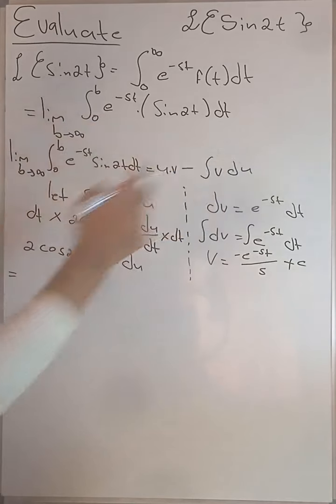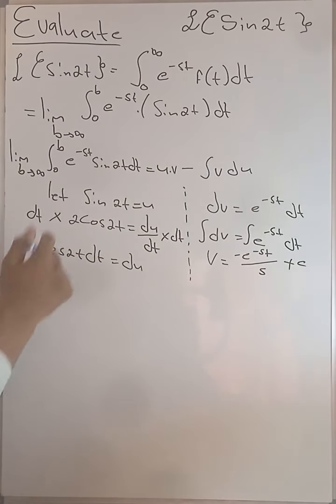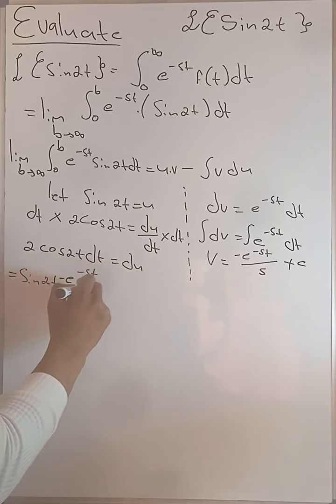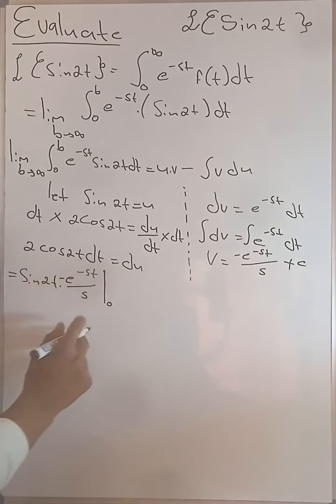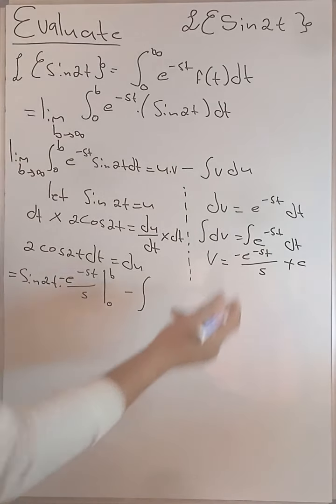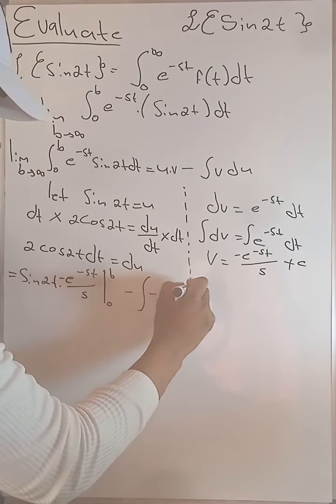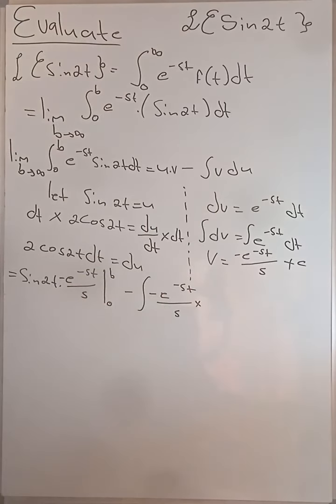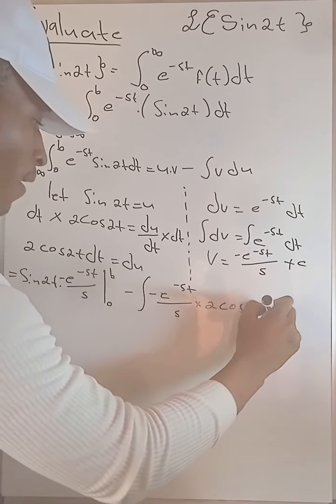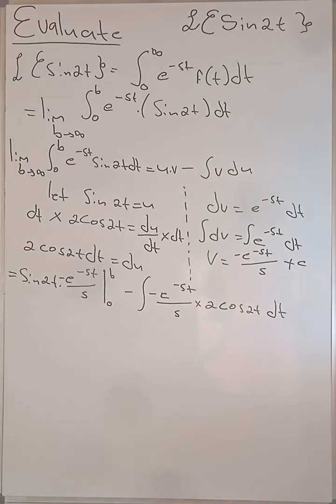Now we substitute into our integration by parts formula. Our u is sin(2t), and our v is -e^(-st)/s. The limit runs from 0 to b. Then we subtract the integral from 0 to b of v du, where v = -e^(-st)/s and du = 2cos(2t) dt.